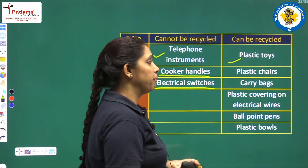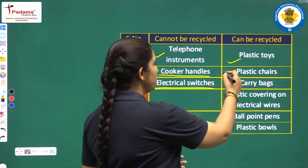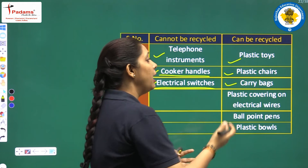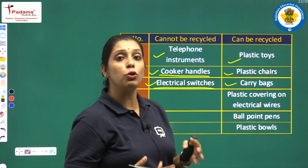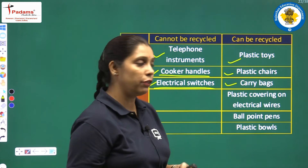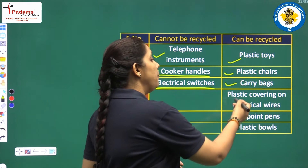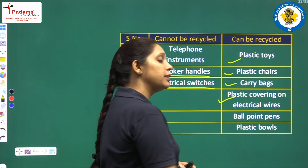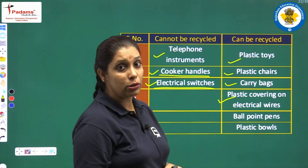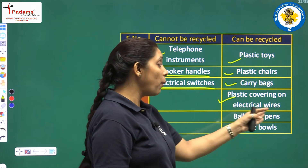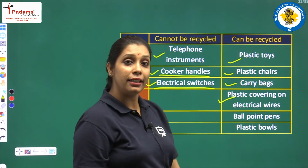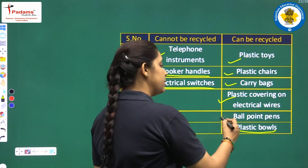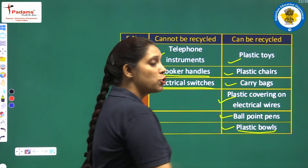Plastic toys — we can recycle them. Plastic chairs, carry bags, plastic covering on electric wires — we can also recycle them. Ballpoint pens and plastic balls — yes, we can recycle them too.